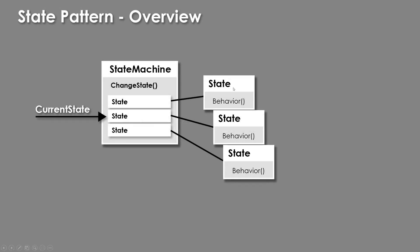As a quick overview of what the state pattern looks like from a high level: we're going to have a class that functions as a state machine. If you've never used a state machine before, think of it as the motor that drives the state changes and keeps track of which state is the current state. Inside of our state machine, we'll have a series of states, and at any point in time we want to know what the current state is.